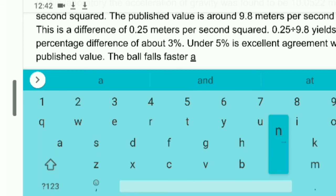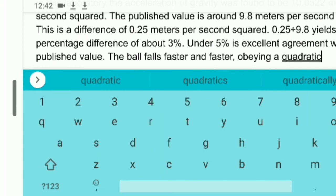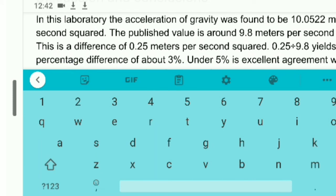The ball falls faster and faster at about 9.8 meters per second per second, or in my measurements, 10.0522 meters per second squared, obeying the quadratic equation that d is one-half gt squared, where g is the acceleration of gravity.